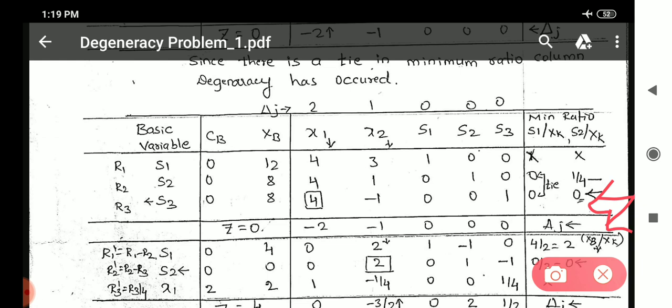So this is the original formula of minimum ratio. Now, whenever there is a tie in minimum ratio column, you should go for the formula like s1 divided by xk, s2 divided by xk and so on. Once that tie is broken, again you should use the original formula of minimum ratio that is xb divided by xk.